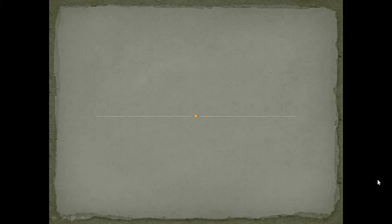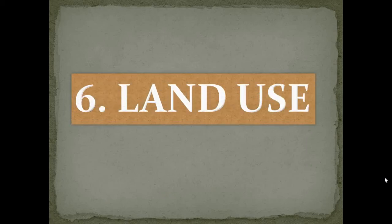Hello dear students, good morning everyone. Children, you may have realized that there is a fixed place for everything. Land is a natural resource. Different parts of land are used in different ways. Today we are going to study in this chapter land use and how the land is distributed and how it is used by man.